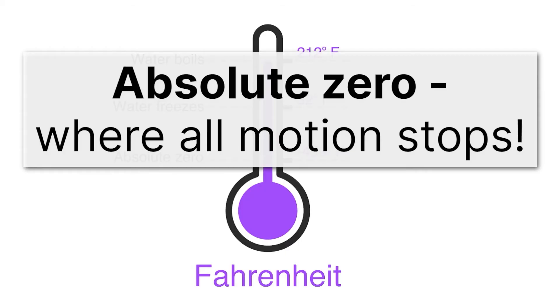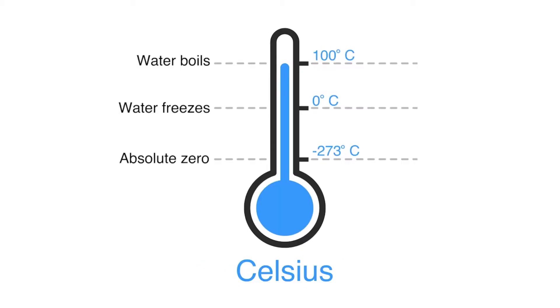A temperature scale we use more commonly in science is the Celsius temperature scale. In Celsius, water boils at 100 degrees Celsius and water freezes at 0 degrees Celsius. Those are nice, easy points to remember. And that's one of the things that makes the Celsius scale a nice scale. How low can you go in Celsius? It turns out minus 273. That's absolute zero in Celsius.